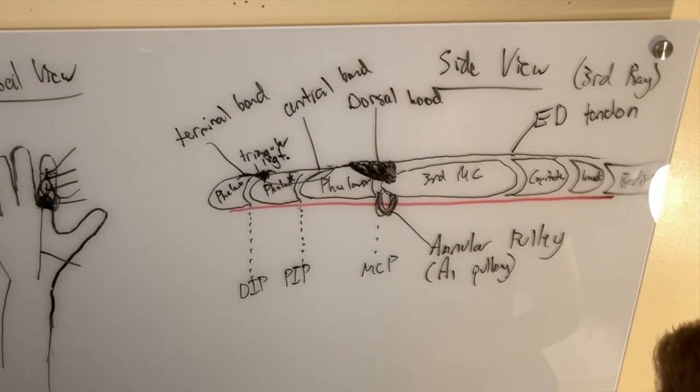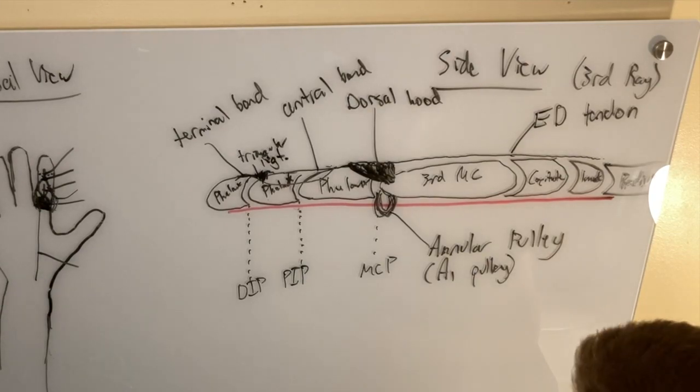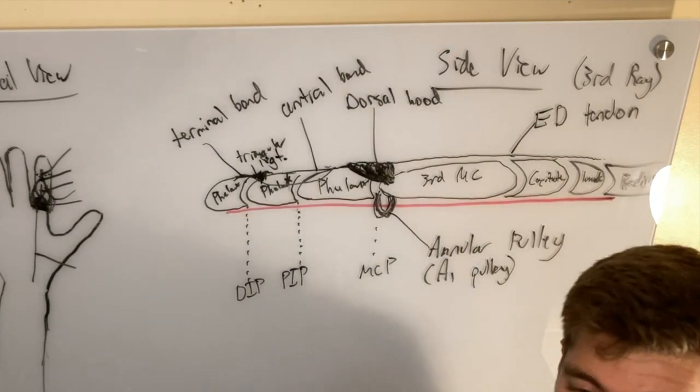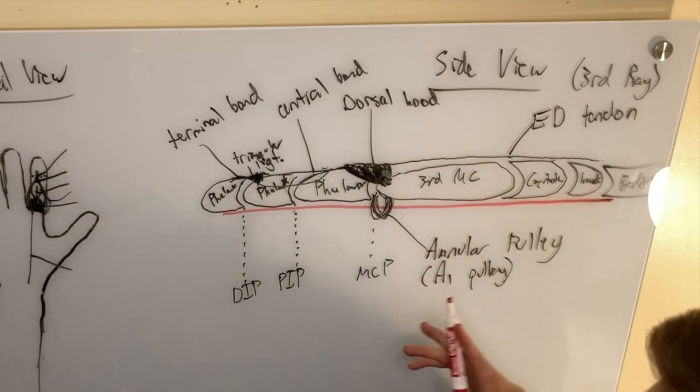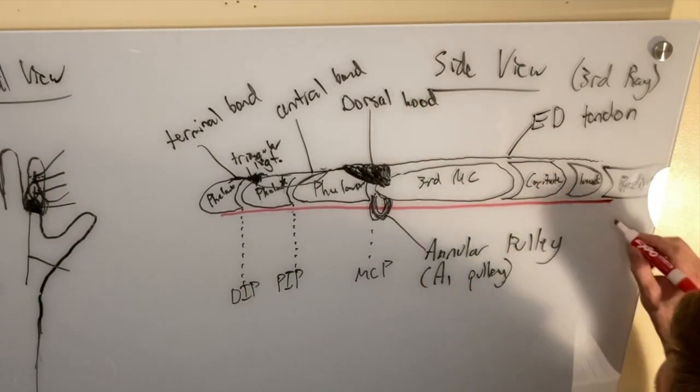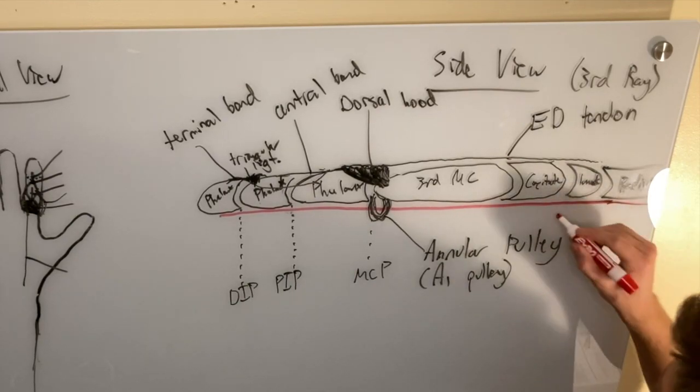So now we just have to add some extra muscles that are super important in opening the hand. So the lumbricals come off of the flexor digitorum profundus tendon. I forgot to label that.